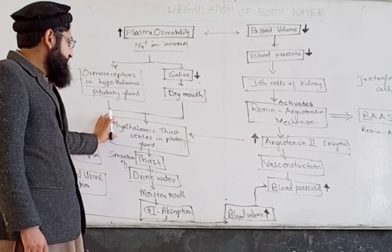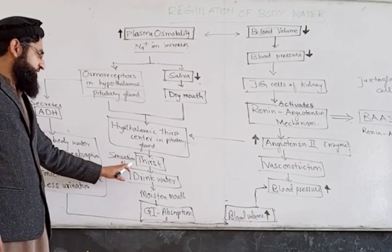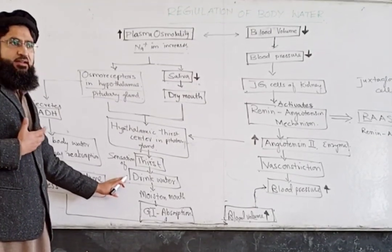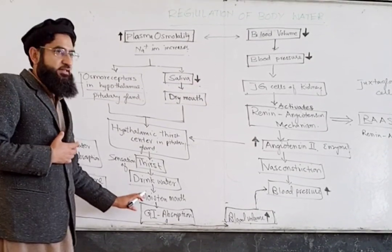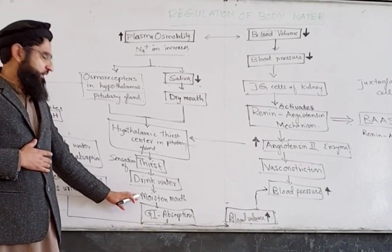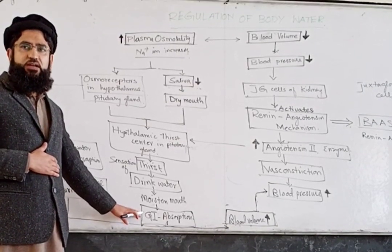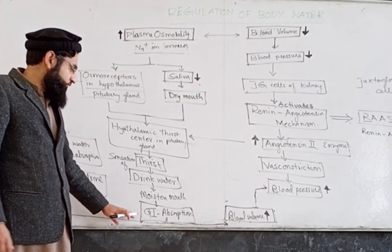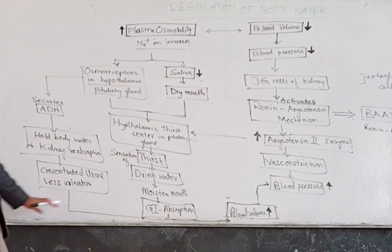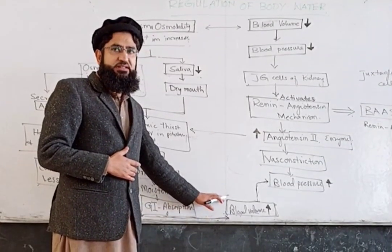Similarly, when the hypothalamic thirst center is activated, it causes the sensation of thirst. When we feel thirst, we drink water. This drinking of water causes moistening of our throat and mouth, and also the stretching of our stomach and intestine, through which gastrointestinal absorption occurs. Both less urination and absorption of water from outside cause blood volume to increase.